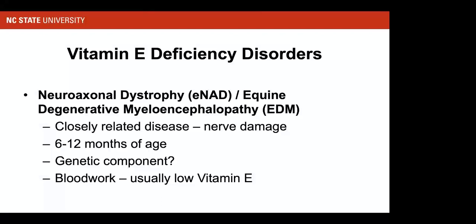Another disorder seen primarily in younger horses is neuroaxonal dystrophy (ENAD) or equine degenerative myeloencephalopathy (EDM). These are two closely related diseases associated with nerve damage. There is believed to be a genetic component — Dr. Finno at UC Davis is a geneticist working to identify the genetic link. These conditions are also associated with low vitamin E as affected horses tend to have low blood levels, though they don't always respond to treatment.